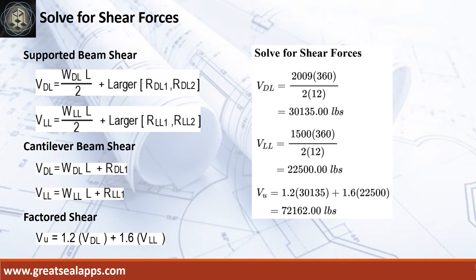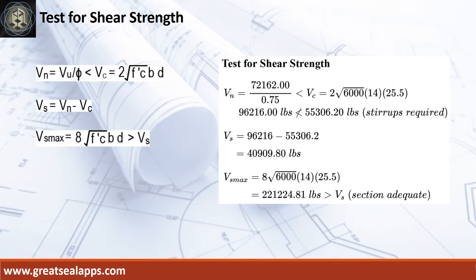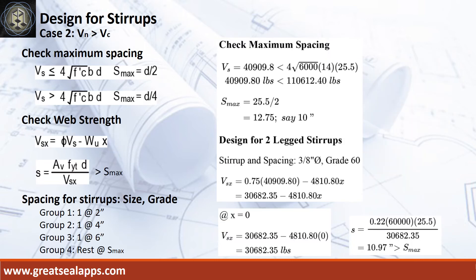The shear force for dead load is 30,135 pounds and live load is 22,500 pounds, for a maximum shear force of 72,162 pounds. The nominal shear force is 96,216 pounds, greater than 55,306.2 pounds concrete capacity. The shear force capacity of stirrup is 40,909.8 pounds, less than 221,224.81 pounds maximum stirrup capacity. Maximum spacing is 10 inches. The shear force at face of support is 30,682.35 pounds, and initial spacing at 10.97 inches.